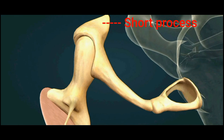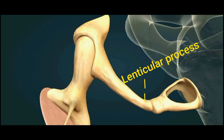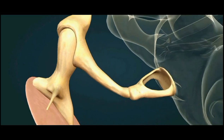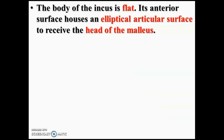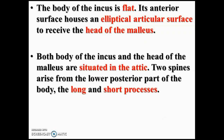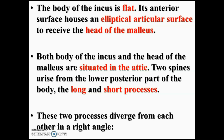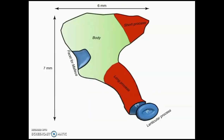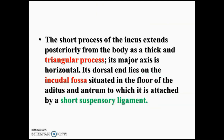You can see the parts: body, short process, long process, and lenticular process. The body of the incus articulates at the posterior medial part of the head of the malleus. The body is situated in the attic, and the long and short processes diverge from each other at a right angle. The short process is thick and triangular with a horizontal axis, and attaches to the incudal fossa by the posterior incudal ligament, also known as the short suspensory ligament. The long process has a direction similar to the handle of malleus but in a more posterior medial plane.